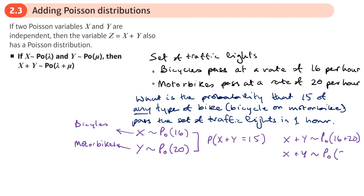The result is a Poisson distribution with rate 36. The 36 represents any type of bike — a motorbike or a bicycle. To find the probability with lambda = 36, on the calculator go to Menu 7, choose Poisson PD (number 2 after scrolling), select variable, enter x = 15 and lambda = 36. This gives a very tiny number: 3.921 × 10⁻⁵.